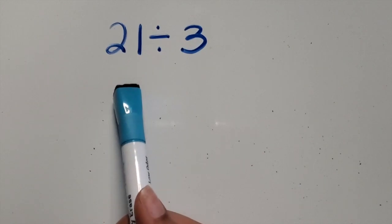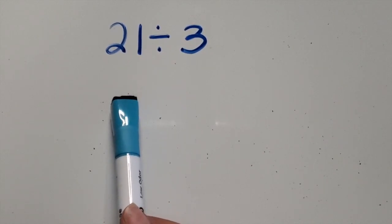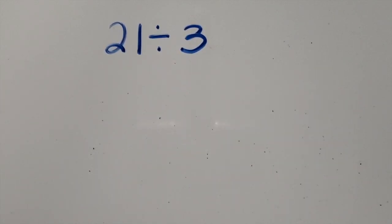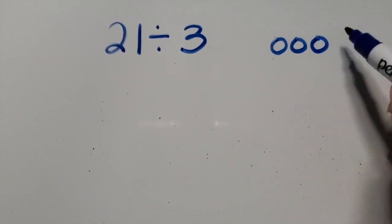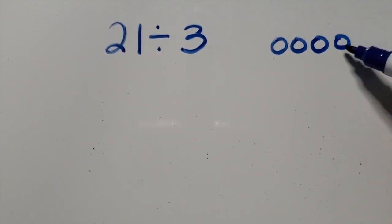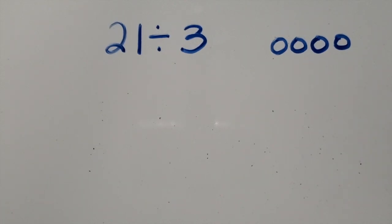We want students to think about what this 21 is representing — it's 21 of something. We can draw 21 objects as a quick pick. We want something that's fast but clear for them to understand. They can choose circles, squares, stars, or tallies — whatever is not going to be confusing. I like to draw 21 circles. I'd rather them do circles than little dots because dots, you can recount a dot on accident easily.